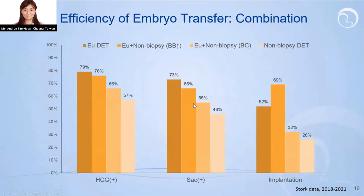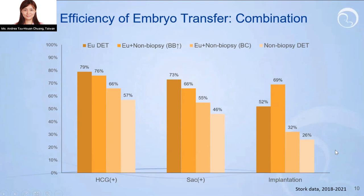If a patient requests two embryos to transfer — perhaps she already had a failed cycle — then simple embryo selection can help with combinations. This figure displays groups of euploid pairs, euploid plus one non-biopsied embryo with better morphology, euploid plus one non-biopsied embryo with poor morphology, and non-biopsied pairs together. You can see trends in biochemical pregnancy and clinical pregnancy rates. Simple embryo selection can help plan transfer strategies and decide options for single, double, or more embryo transfers.